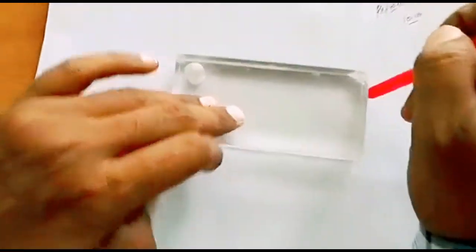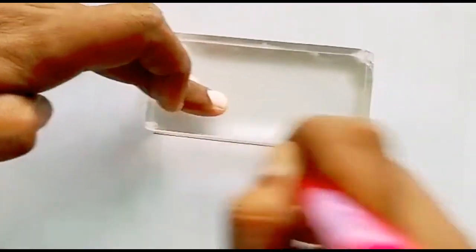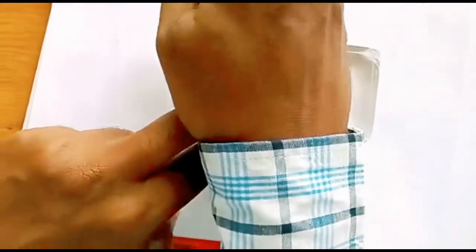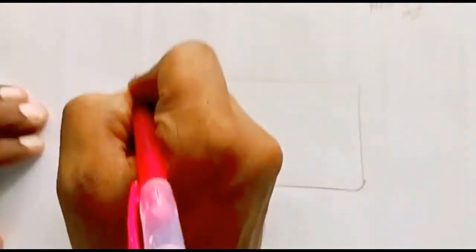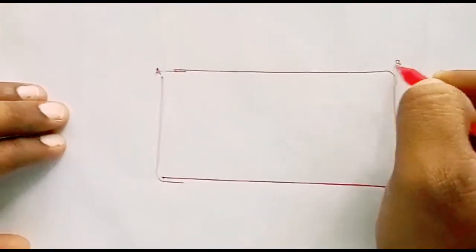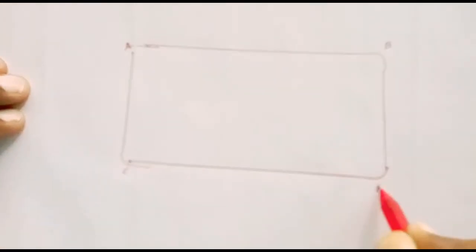First we will take a glass slab and mark its outline. So I am marking its outline, please see it. After marking its outline, I will remove this slab and mark it as A side, B side, C side, and D side.